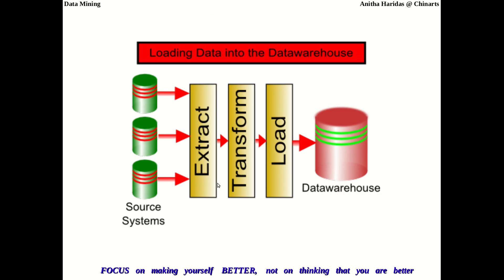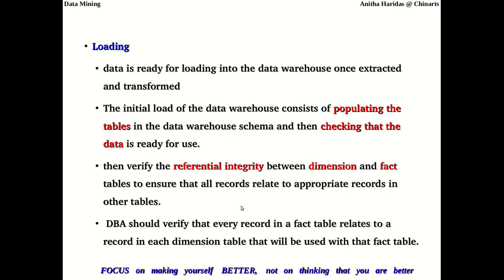In the transformation process, both cleaning and transformation are performed. The next back-end process is data loading. Once data is extracted and transformed, it is ready to be loaded into the data warehouse. During initial loading, the data warehouse tables are populated. The data warehouse uses schemas such as star schema or snowflake schema, which include fact tables and dimension tables, and these are populated with the extracted and transformed data.